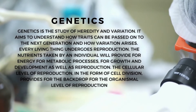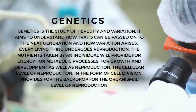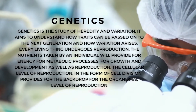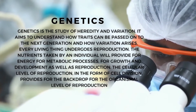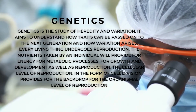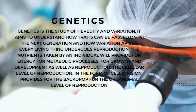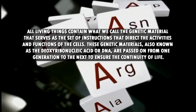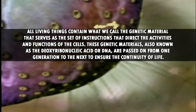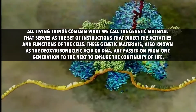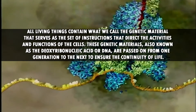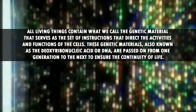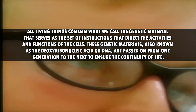Every living thing undergoes reproduction. The nutrients taken by an individual will provide energy for metabolic processes, for growth and development as well as reproduction. The cellular level of reproduction in the form of cell division provides the backdrop for the organismal level of reproduction. All living things contain what we call genetic material that serves as the set of instructions that direct the activities and functions of the cell. These genetic materials, also known as deoxyribonucleic acid or DNA, are passed on from one generation to the next to ensure the continuity of life.